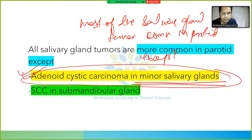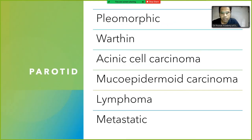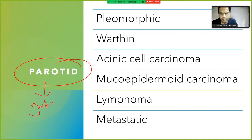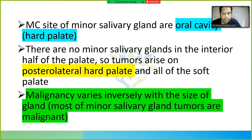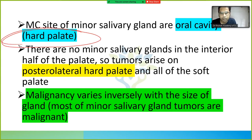Exception: adenoid cystic carcinoma is more common in minor salivary glands, and squamous cell carcinoma is more common in the submandibular gland. In the parotid, tumors include pleomorphic adenoma, Warthin tumor, acinic cell carcinoma, mucoepidermoid carcinoma, lymphoma, and metastatic carcinoma.